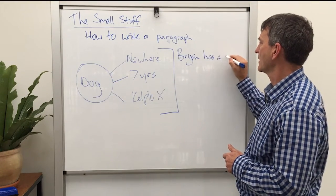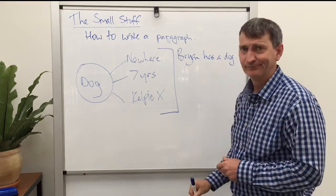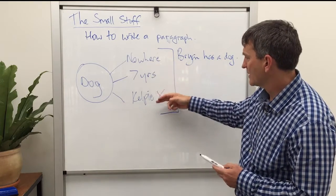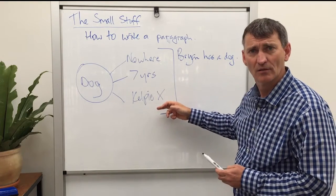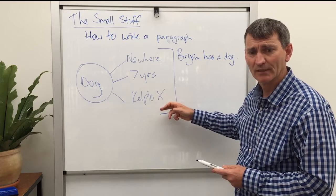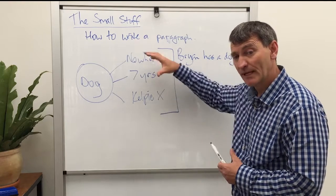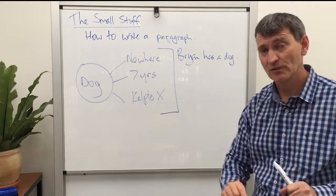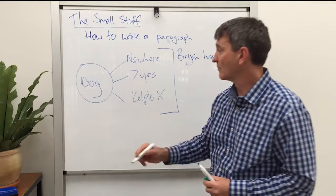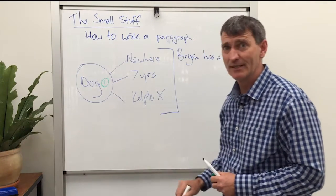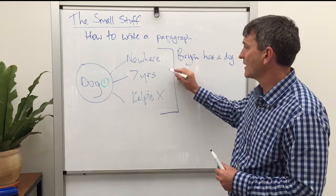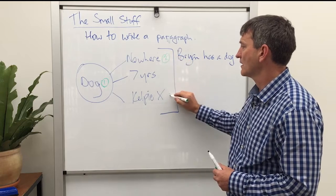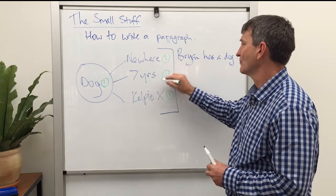Brian has a dog. Then I can look at these and say, okay, which order do I want to put them in? And if I was doing this, making this explicit with a group of students, then I'd be using a pen and say that's sentence number one. Maybe I'm going to say sentence two, sentence three, sentence four.